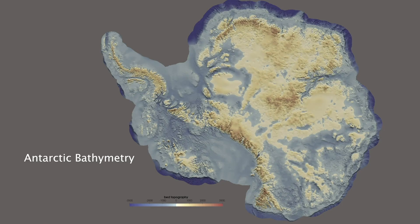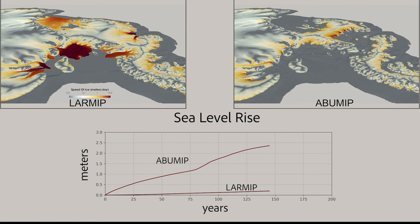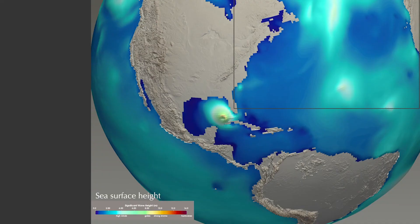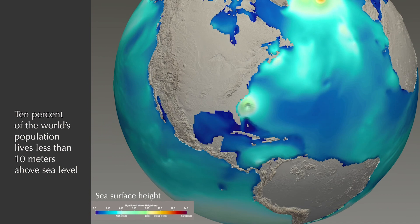Antarctica's ice sheets store many tens of meters of sea level equivalent. While we do not think the majority of the Antarctic ice sheet is vulnerable to mass loss, even under more aggressive climate change scenarios, there is so much ice that even the loss of a small fraction would have a catastrophic impact on low-lying coastal regions around the globe. Thinning of the ice sheets translates directly to increased rates of sea level rise. When ice flows into the ocean and is not replaced with precipitation, the sea level rises. We have looked at only one of the many possible contributors to sea level rise on our path to understanding how to accurately couple ocean and land ice models. Ten percent of the world's population lives less than 10 meters above sea level. Even minor increases in sea level can have devastating human and financial impacts. Using supercomputers, we can validate and expand our understanding of cryosphere-ocean interactions and their ultimate impact on society and other Earth systems.